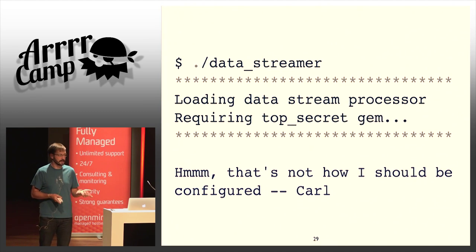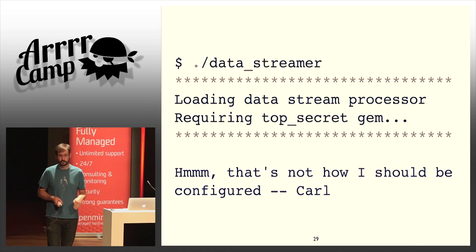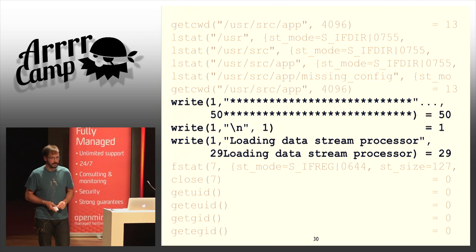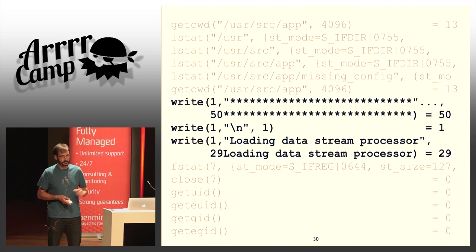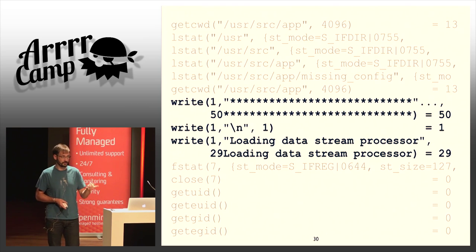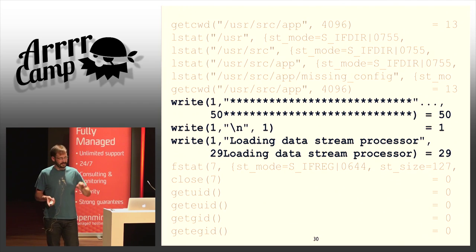We can see our loading messages getting written out — that writing shows up in the syscall output. And at some point after that, we get Carl's message, which is also written. If we find the two locations in our output where that writing is happening, we can look at the things that happened between those points in time and get a hint as to where things went wrong. We look at the write syscall going to file descriptor 1 — that's standard output — and see the data being written.